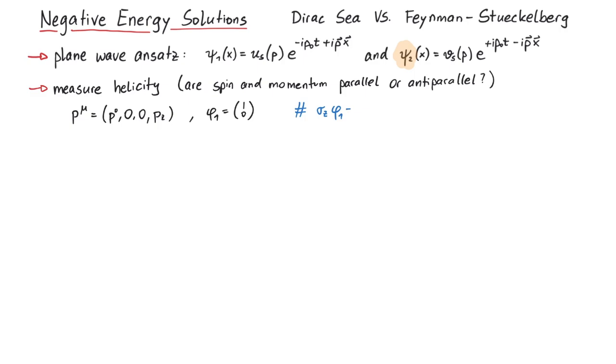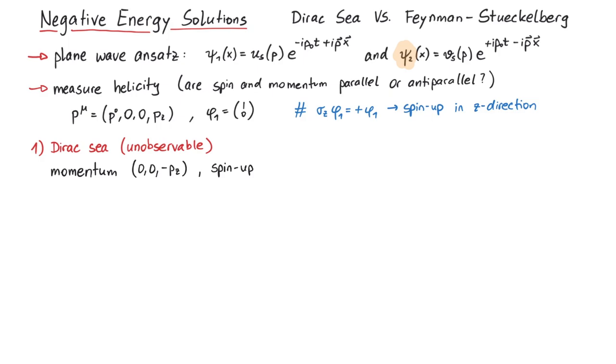First, the unobservable negative energy state in the Dirac-Sea. The momentum is minus p, so it goes in negative z direction. Its spin is up. So they are antiparallel, which means left-handed.